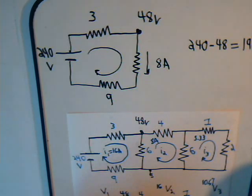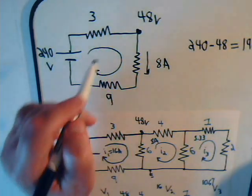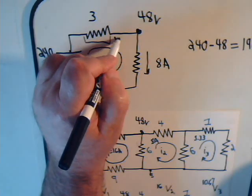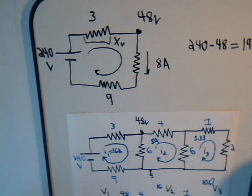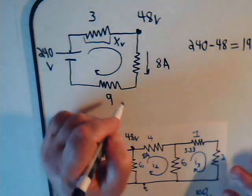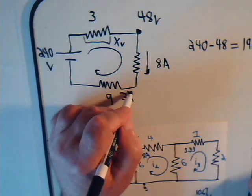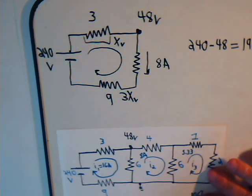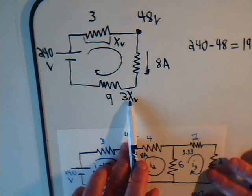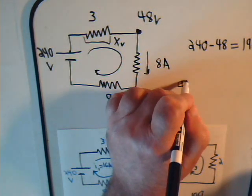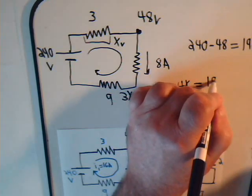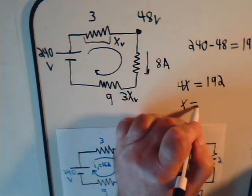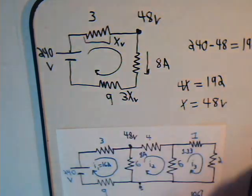Okay, now we don't know what it is, but let's just say then that the voltage drop across this resistor here, let's just say it's X volts. Well, if that's X, then for here it has to be 3 times X, because this resistor is 3 times that resistor. So what do we have? We have X plus 3X is 4X. 4X equals 192. X equals 48 volts.